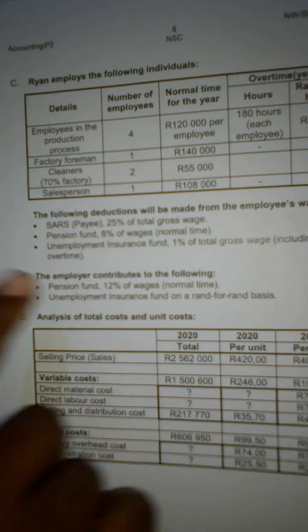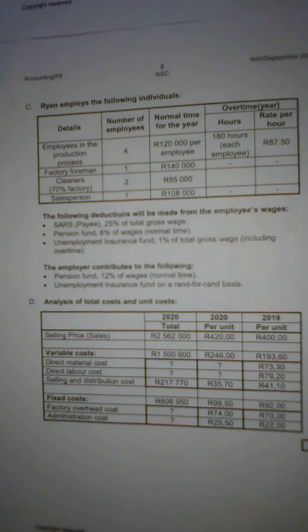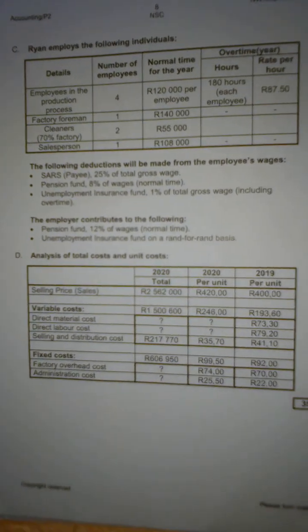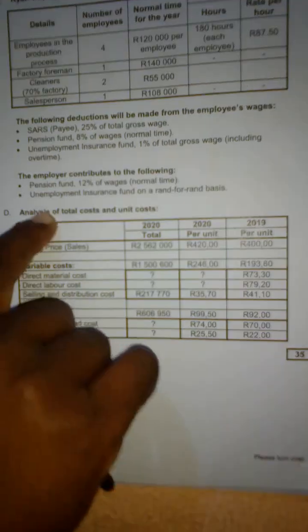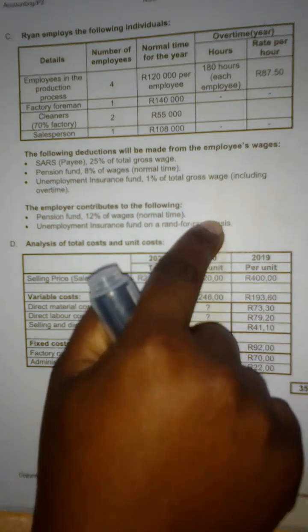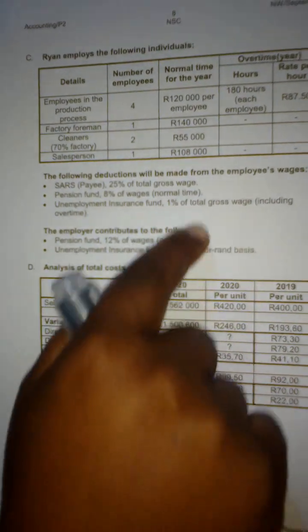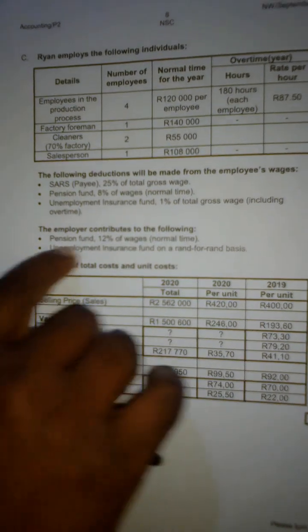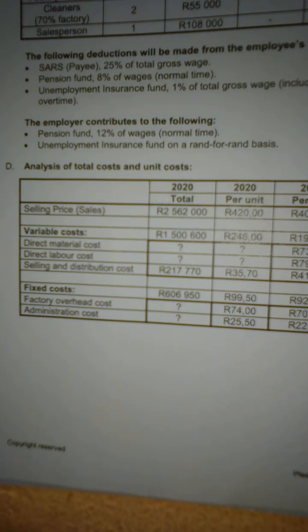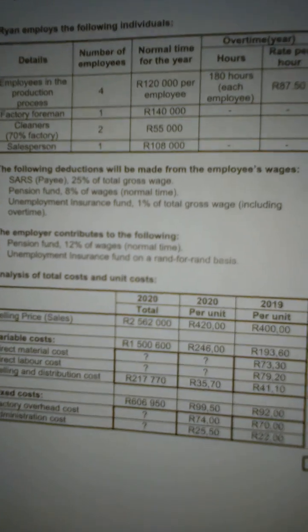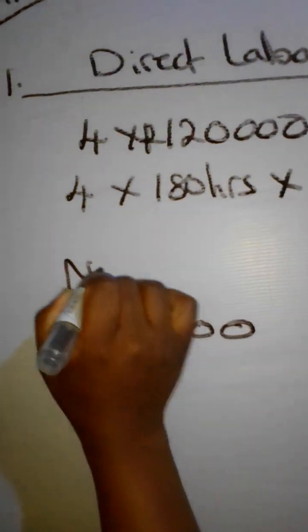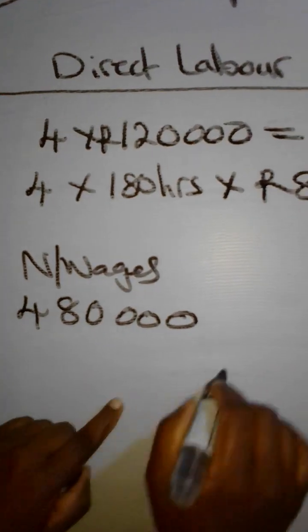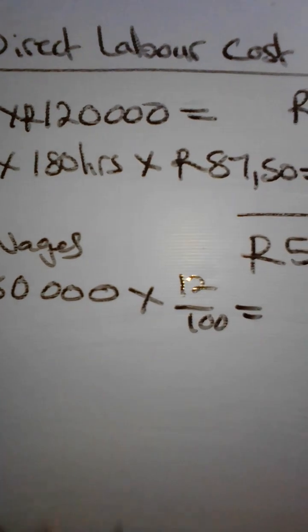Looking back at information C, there are deductions from employees' wages, but we are not interested in those deductions. We are only interested in the employer's contributions — the gross wage. The employer contributes to the pension fund at 12% of the normal time wages, and to the unemployment insurance fund on a rand-for-rand basis. Let's calculate the pension fund: 12% of the normal wages of R480,000.